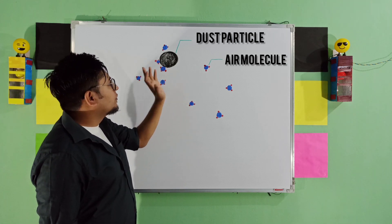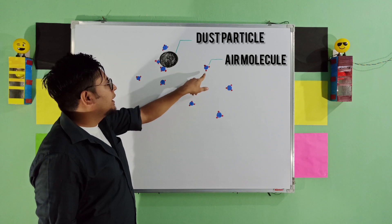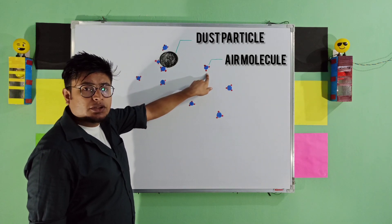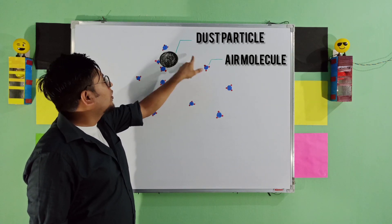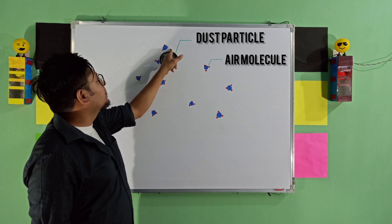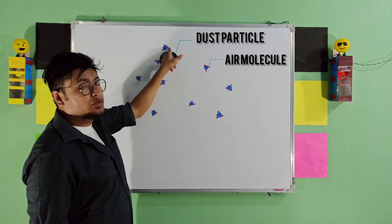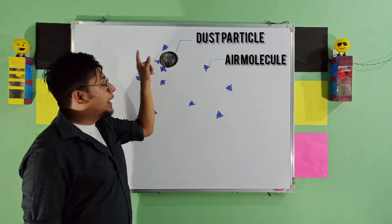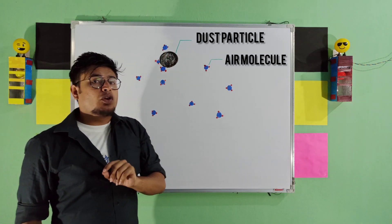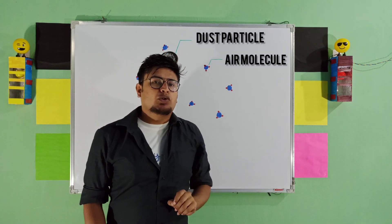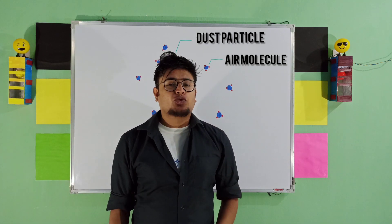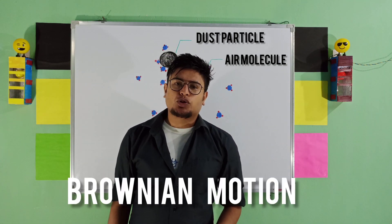As this moves forward, it might go on collision with this molecule, or if it goes in this direction, it might go on collision with another one. Because of these collisions, it goes on a random motion, and this particular random motion is known as Brownian motion.